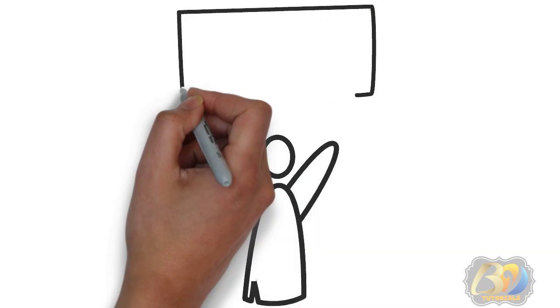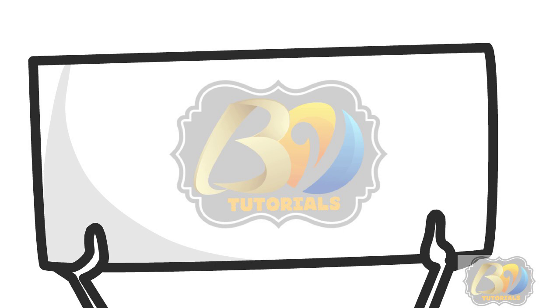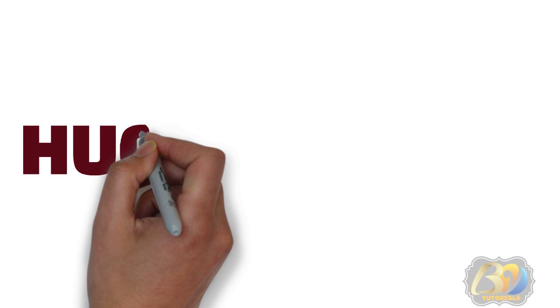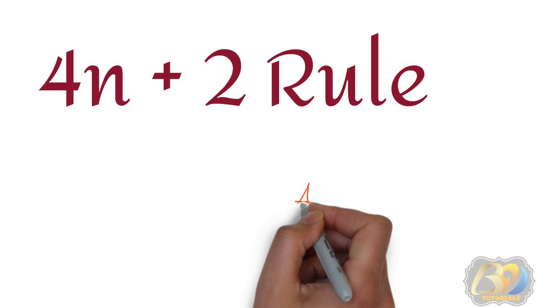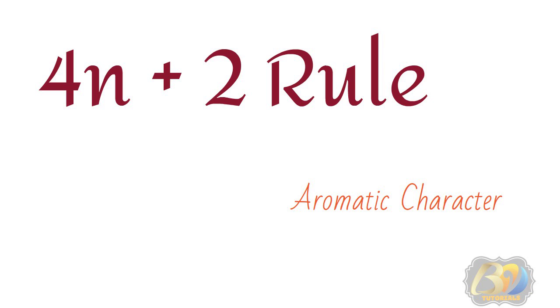Hello friends, how are you? Welcome back to BVTutorials. In this video, we are going to discuss one of the most important topics under the heading of Benzene — that is Hückel's Rule. Hückel's Rule can also be considered as the 4n+2 Rule, and it is always essential to identify the aromatic character of organic compounds.